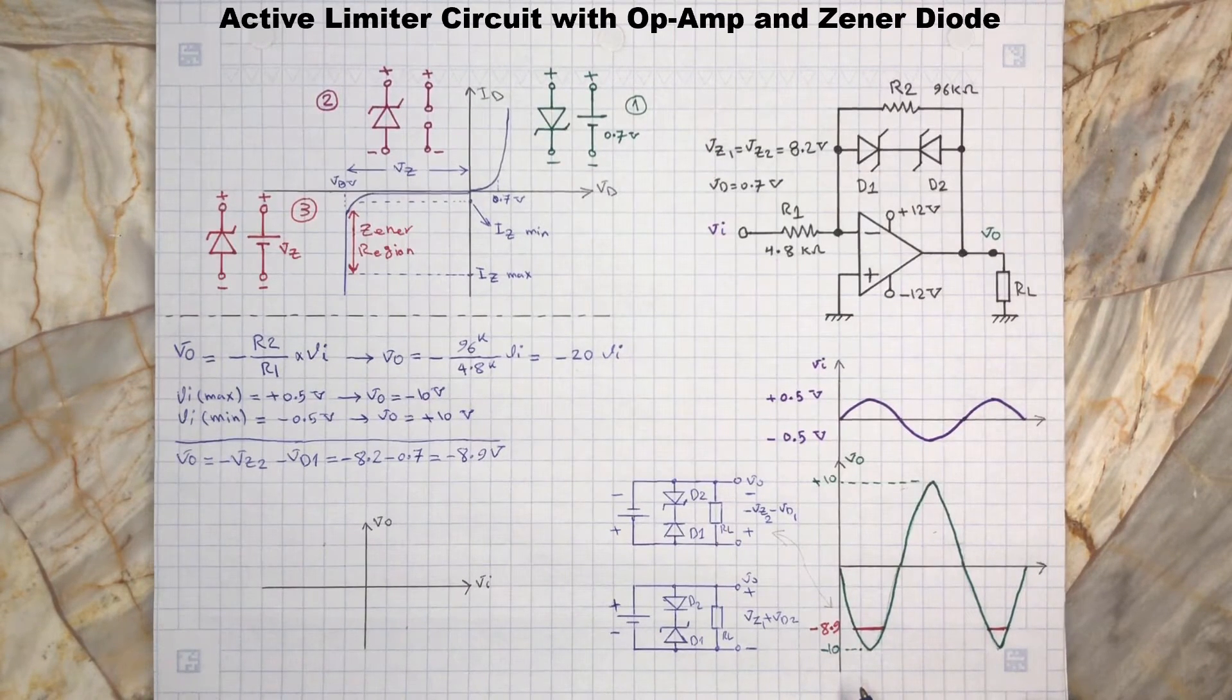Now we know that the output voltage will not go under negative 8.9 volts, but how high can the output voltage rise? Before we continue, please subscribe to the channel if you haven't yet. Your support will help this channel to grow and encourage me to create more content. Thank you, and now back to the video.